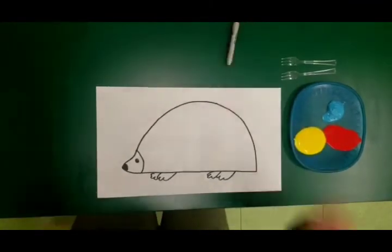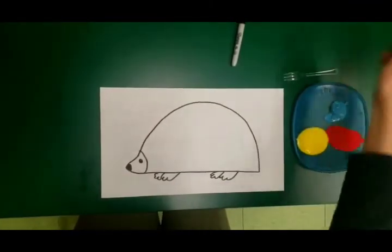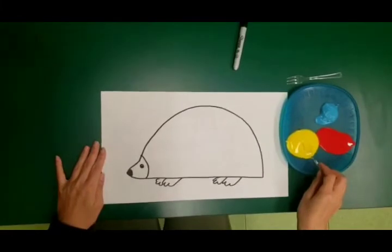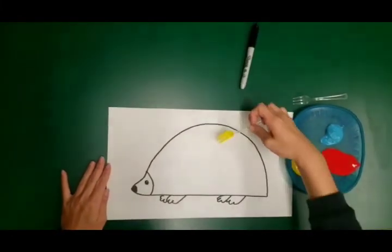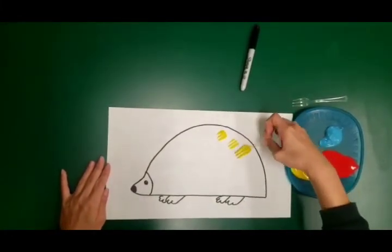After this is done, we can get the fork, very simple, and just tap the paint on there to create your spikes.